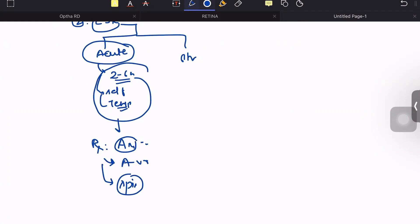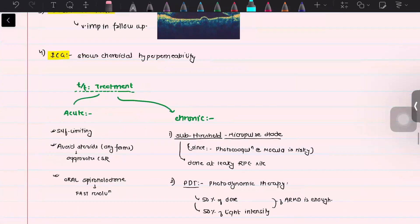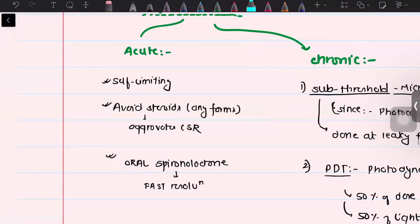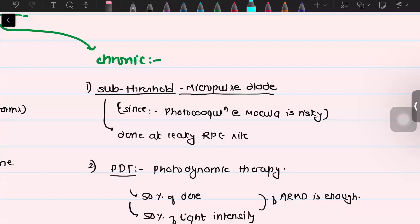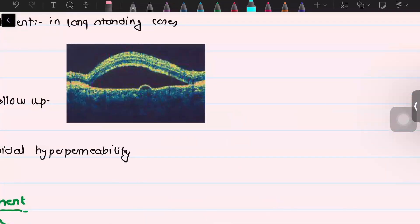Chronic patients are more concerning as they have permanent damage to the rods, cones, and retinal pigment epithelium. These patients present after 12 months. Treatment includes anti-VEGF therapy and photodynamic therapy, which is the mainstay of treatment. We can also advise soft threshold micropulse diode therapy. This concludes our discussion on central serous retinopathy.